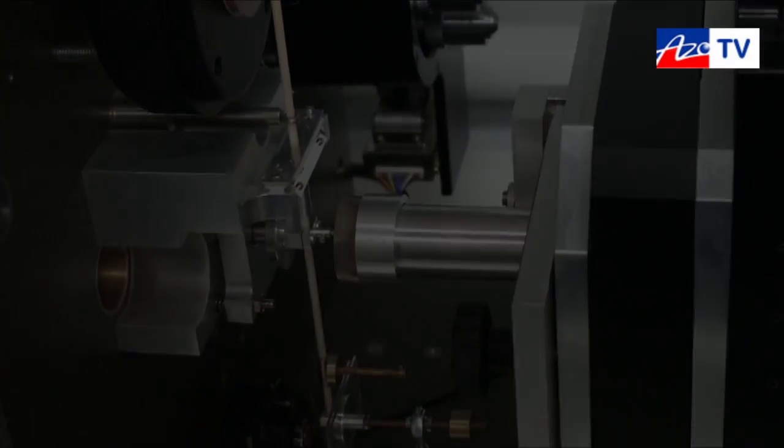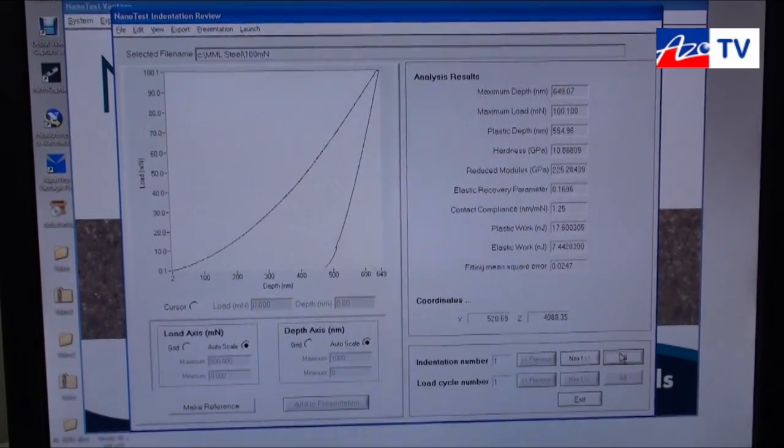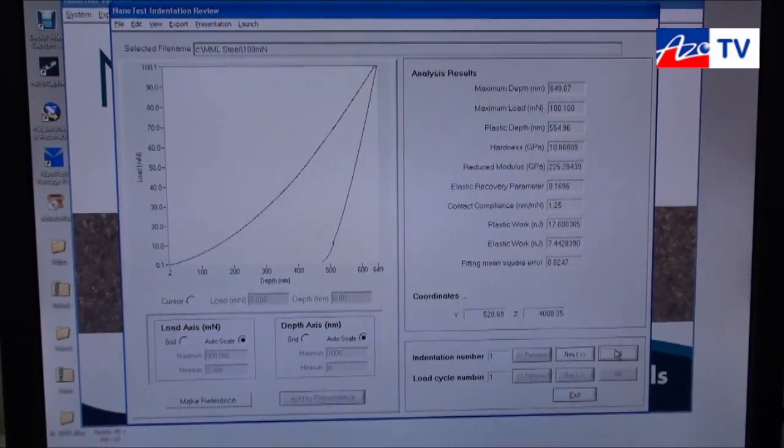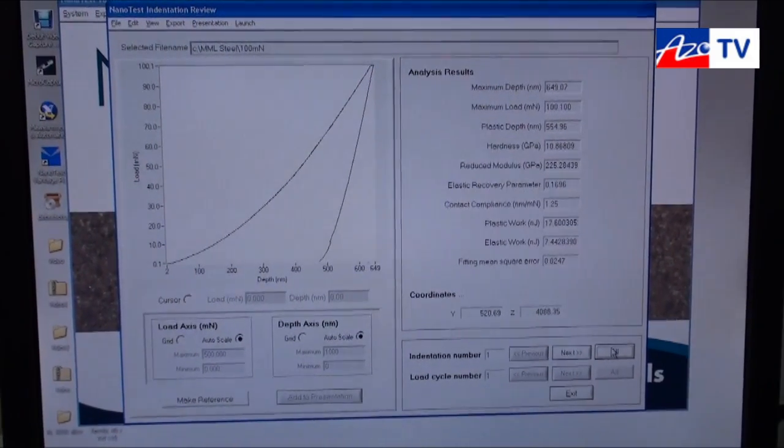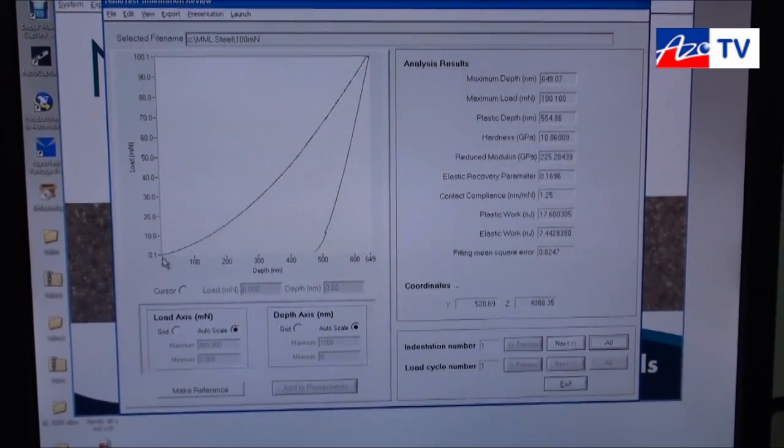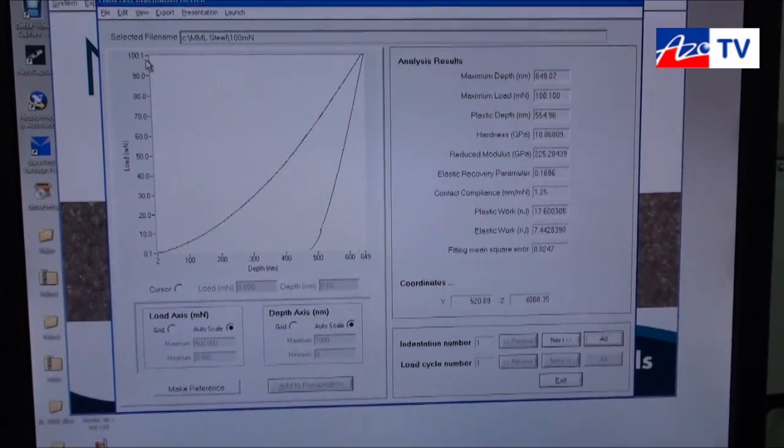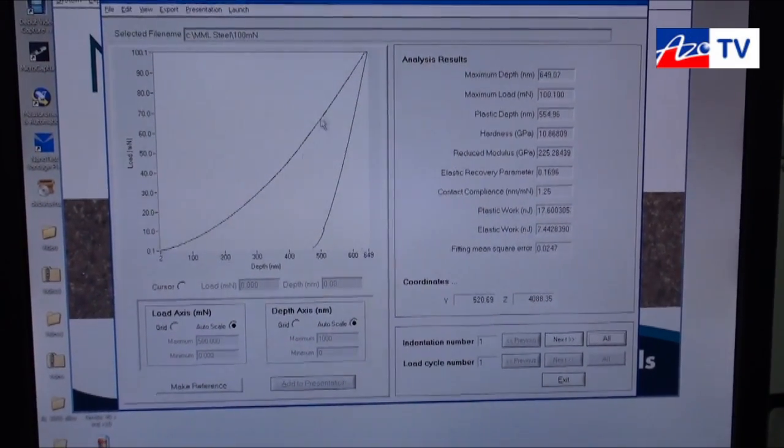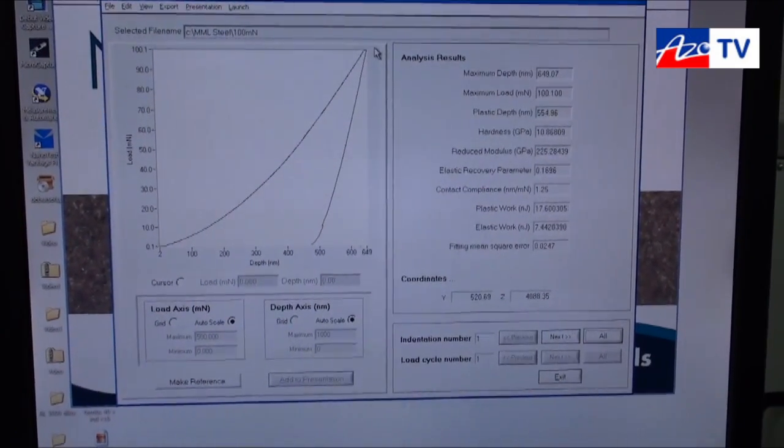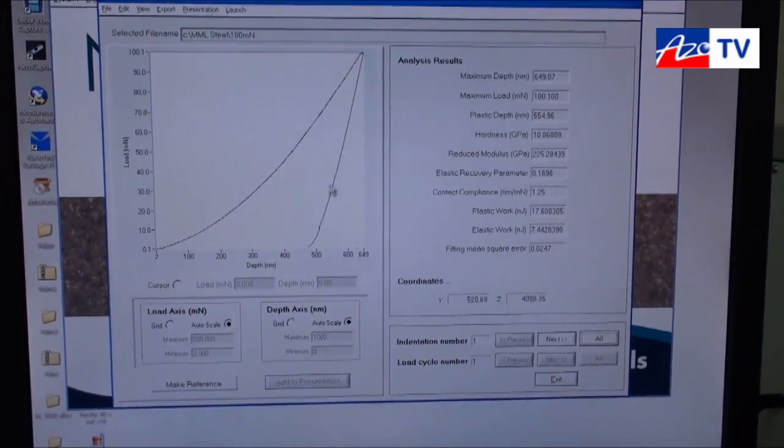It's just going to run through. This is a typical set of indentation data, actually taken from a steel sample, one of the samples we use here at MML for calibration. This is the plot of a single indentation. First we have the change in depth as the load is slowly increased, with load on the vertical axis here, up to a maximum load. We then have a hold at peak load to let any driven viscoelastic deformation settle down before unloading.